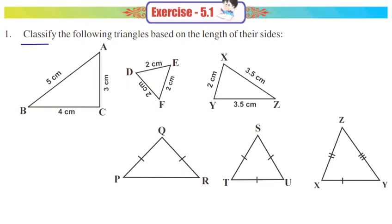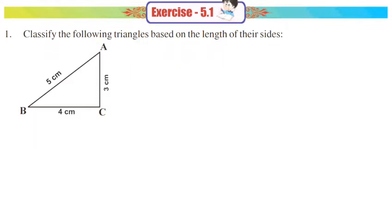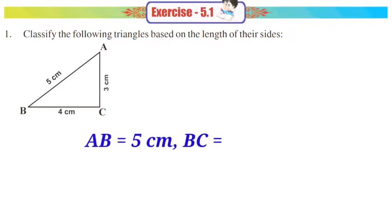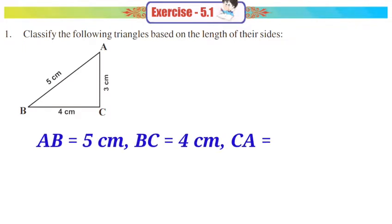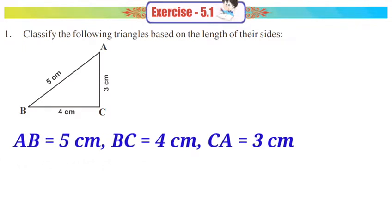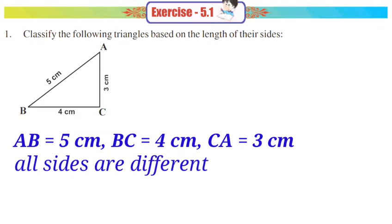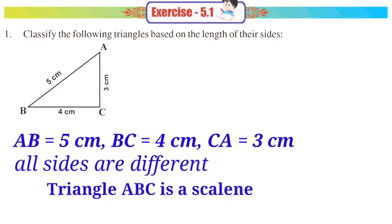Classify the following triangles based on the length of their sides. Observe the first diagram. The triangle ABC: the side AB is equal to 5 cm, the side BC is equal to 4 cm, the side AC is equal to 3 cm. All sides are different, so the triangle is called a Scalene Triangle.